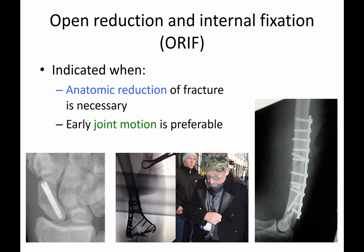Another form of treatment is open reduction internal fixation, or ORIF. This is indicated when anatomic reduction of a fracture is necessary — when you really need to piece something back together because that's the best option for that patient and injury. Fractures that involve a joint surface are the classic example, because you don't want step-offs, you want the joint lined up appropriately, and you want to allow early joint motion to prevent stiffness.